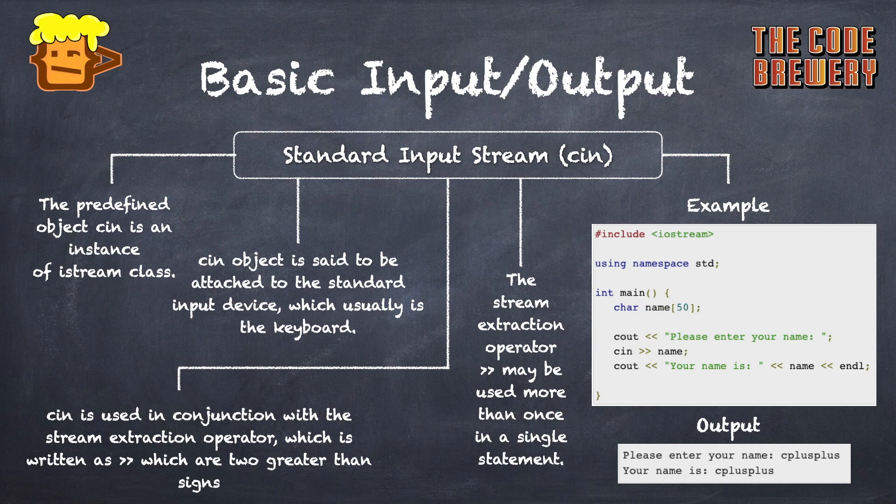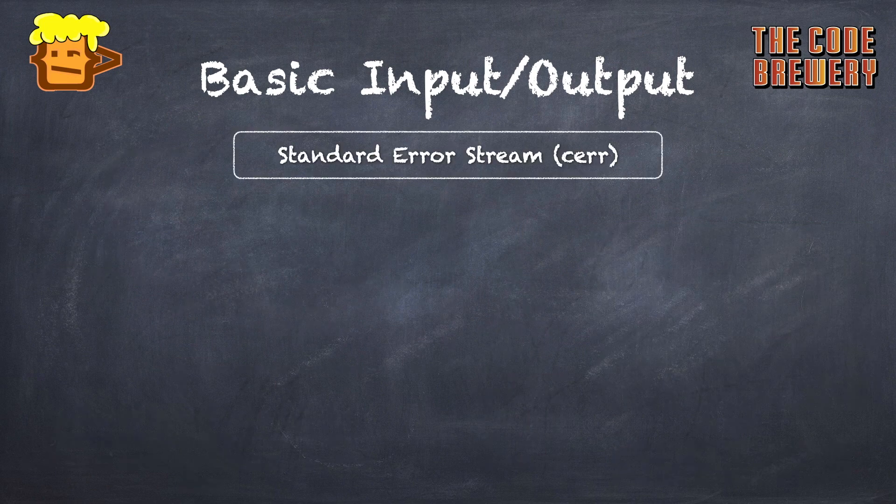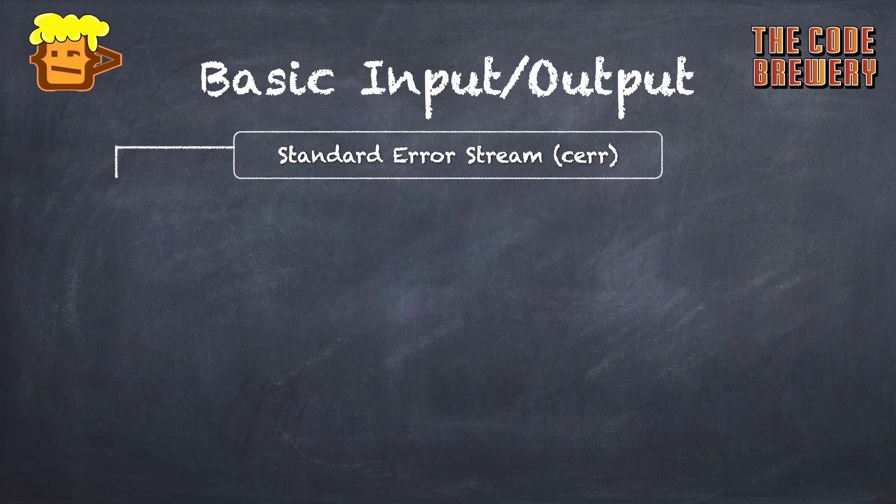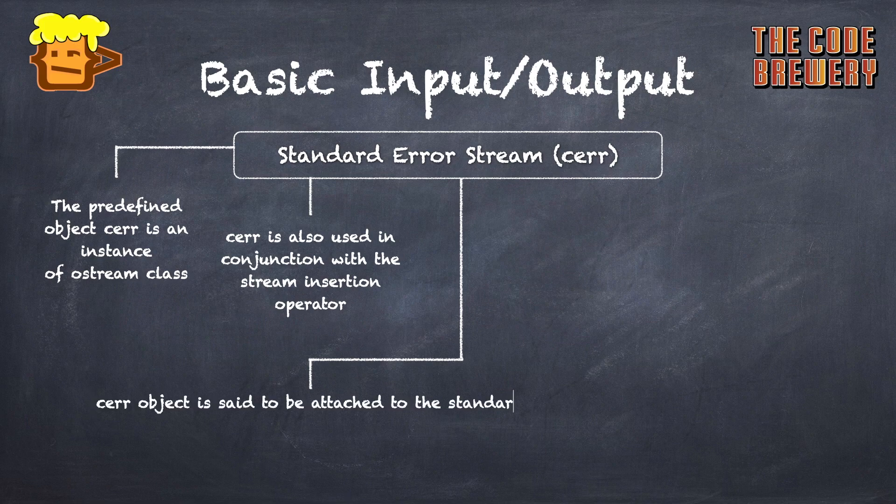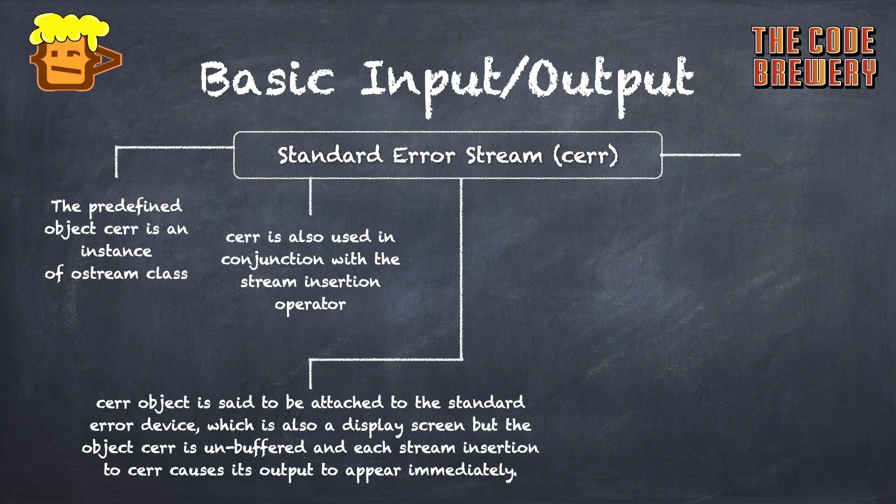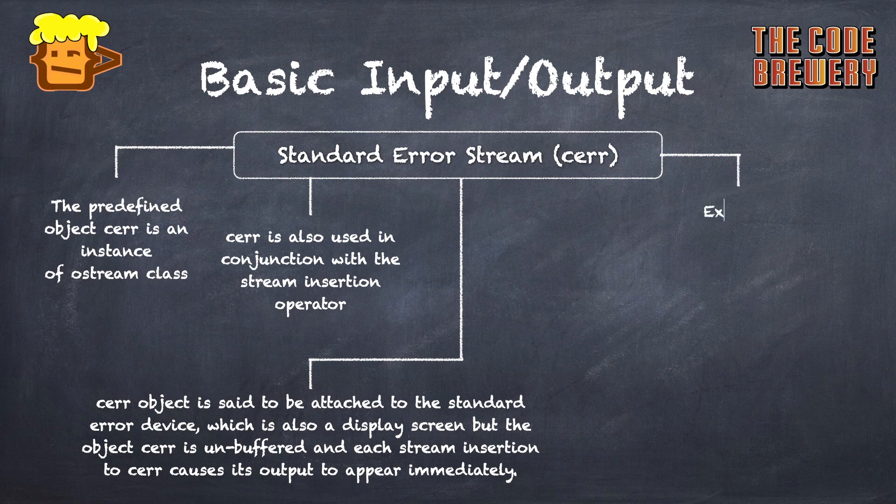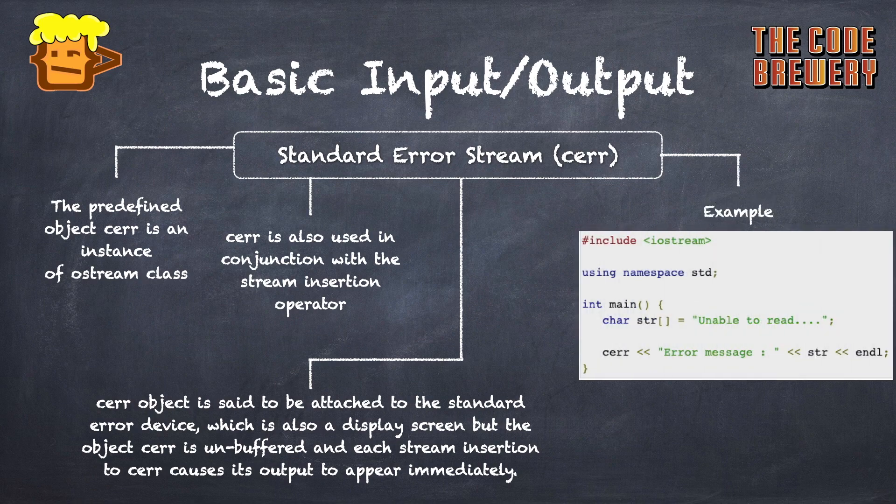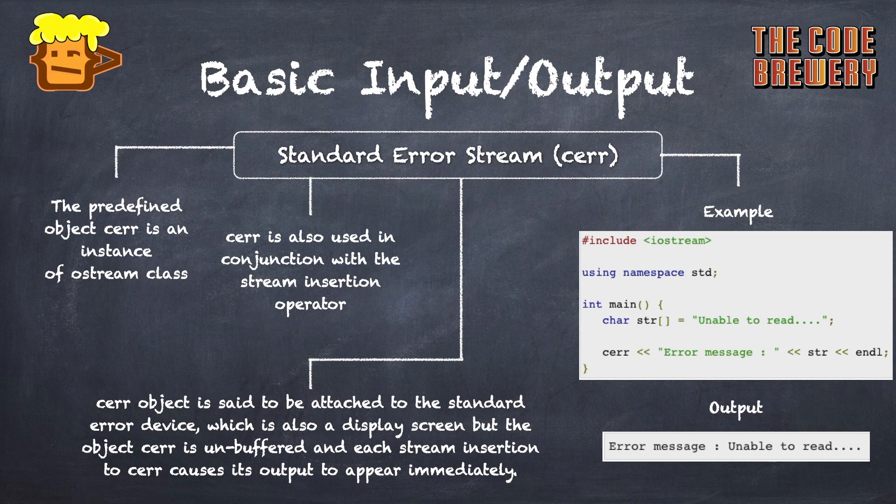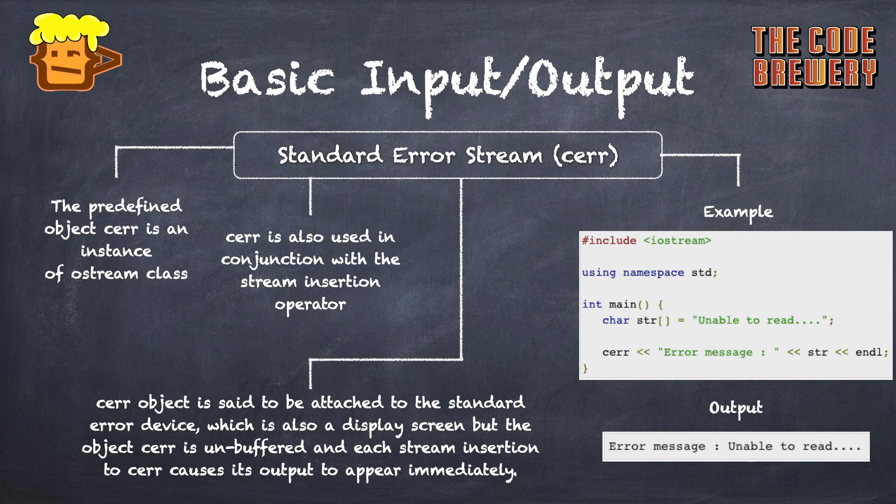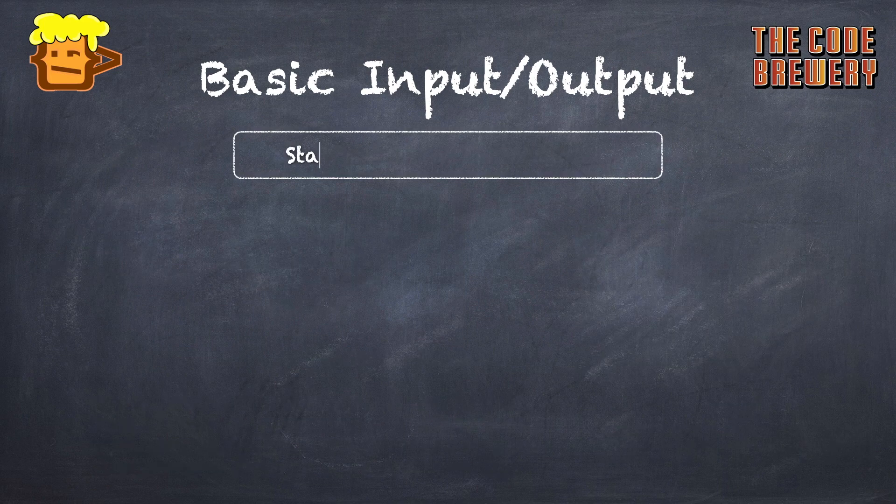If we talk about the standard error stream cerr: the predefined object cerr is an instance of the ostream class. The cerr object is attached to the standard error device, which is also a display screen, but cerr is unbuffered, and each stream insertion to cerr causes its output to appear immediately. We can use cerr in conjunction with the stream insertion operator, as we do with cout.